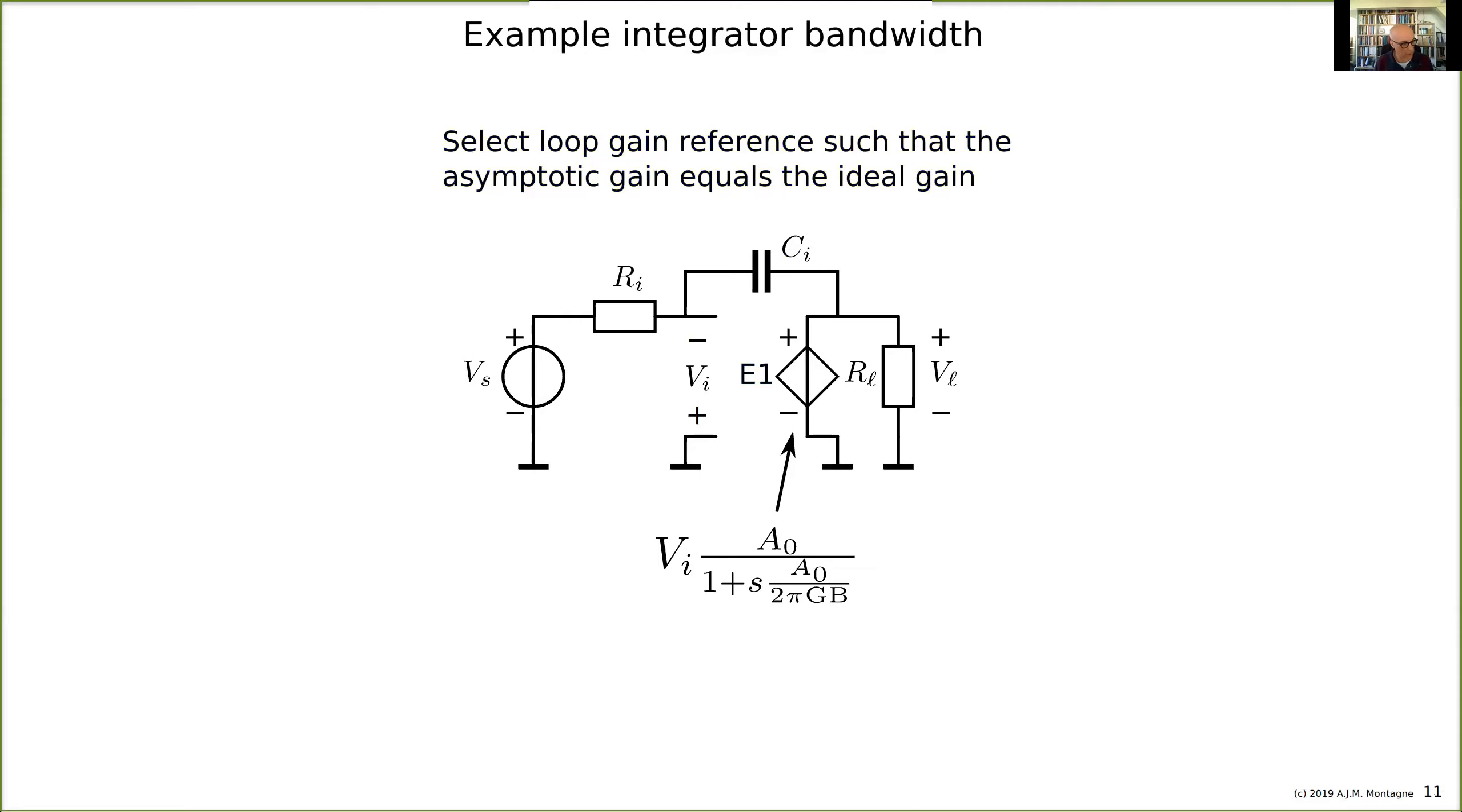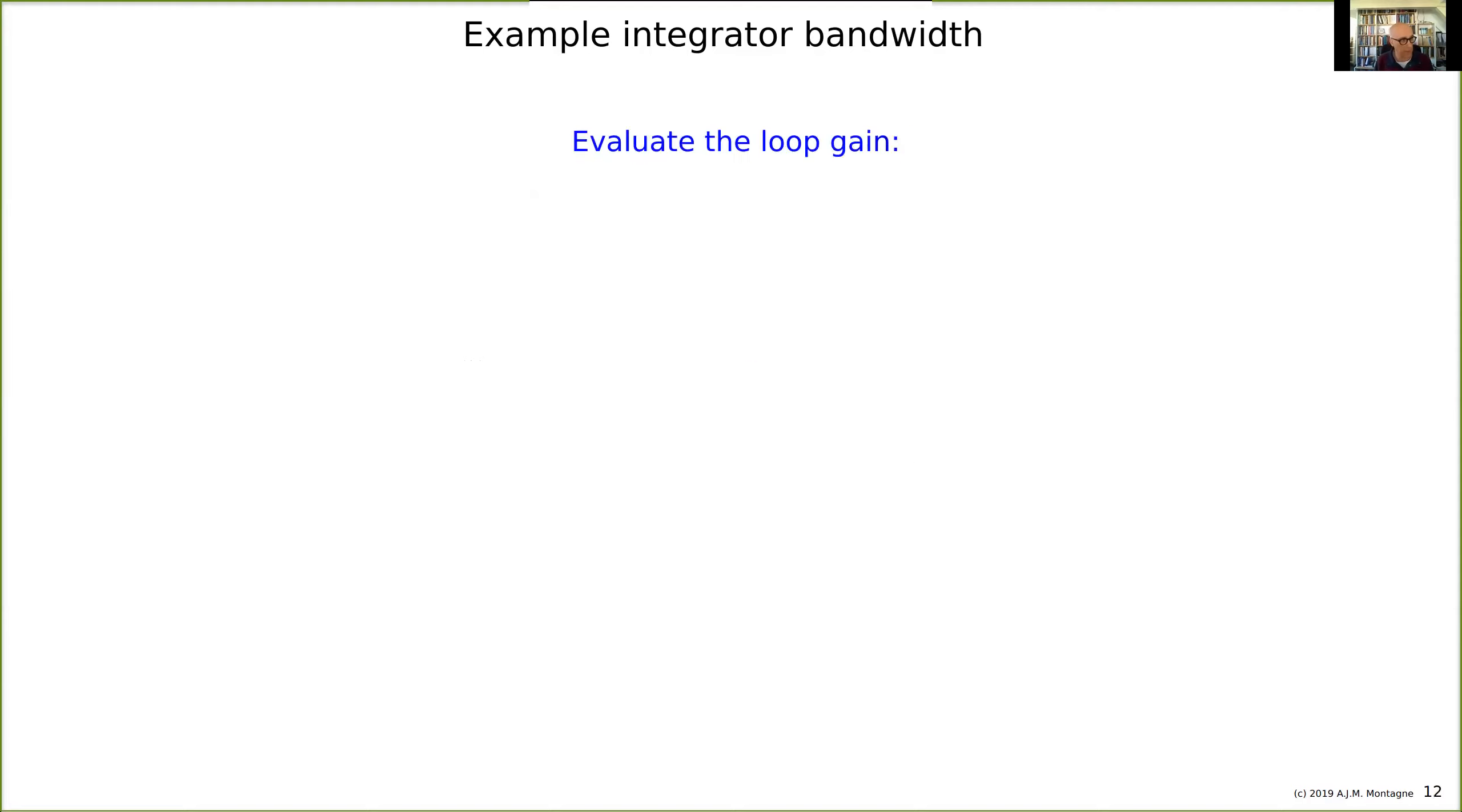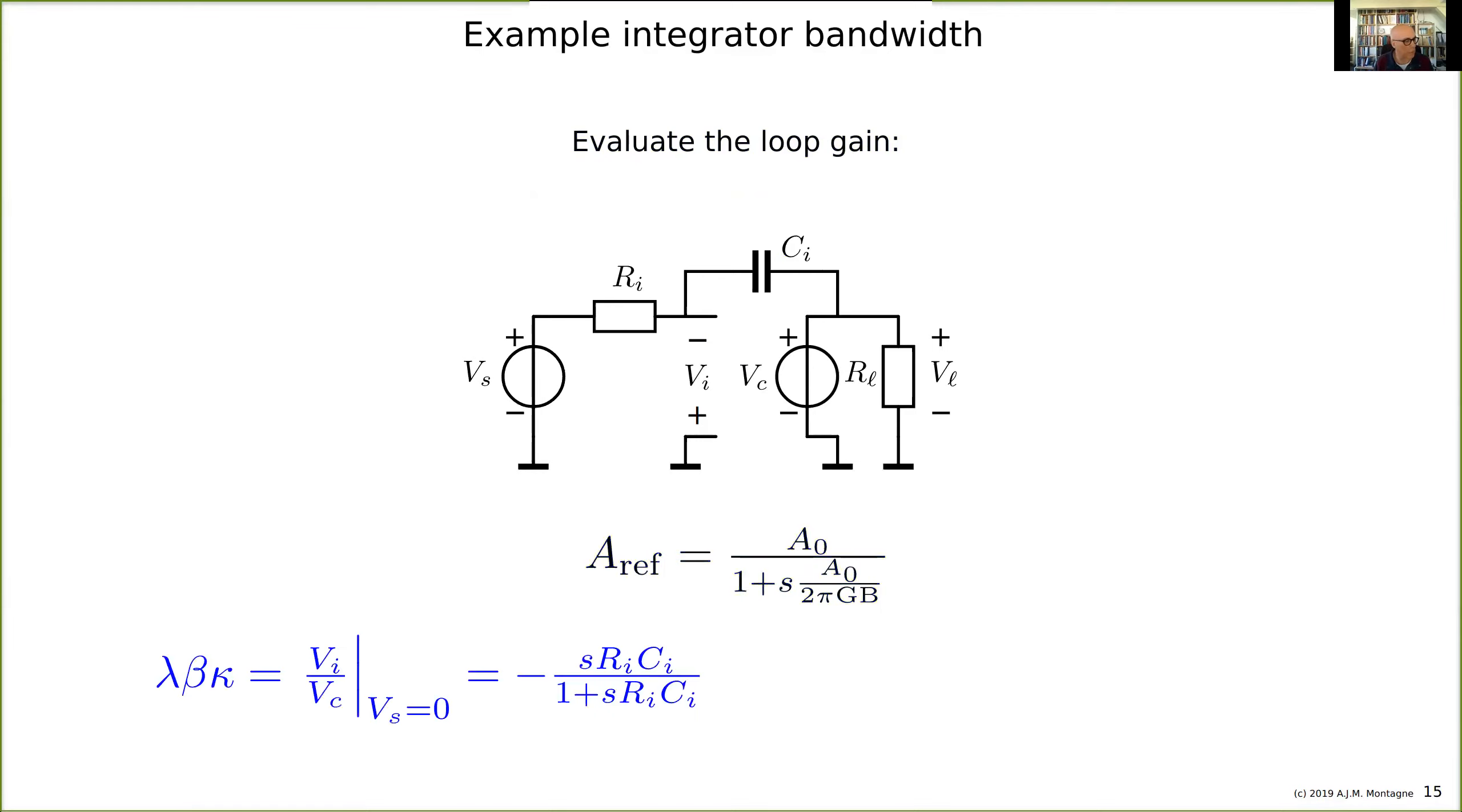This is the transfer of the controlled source used as reference variable. Then we evaluate the loop gain. We replace the controlled source with an independent source and calculate the transfer from VC to VI and multiply this with the reference variable selected in the previous sheet. The reference variable is this one, and the transfer from this to this is given by lambda, beta, kappa. It can be written as a simple unity gain high pass filter: S times RI times CI divided by one plus S times RI times CI with a minus sign.